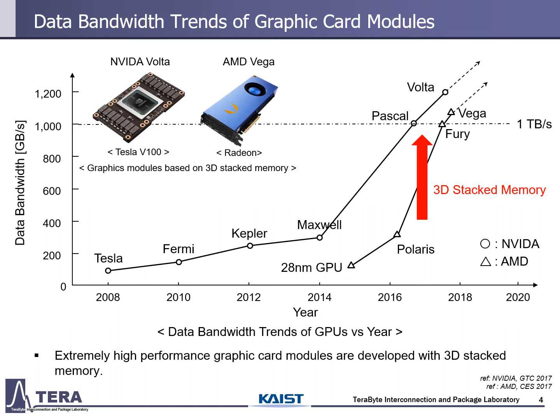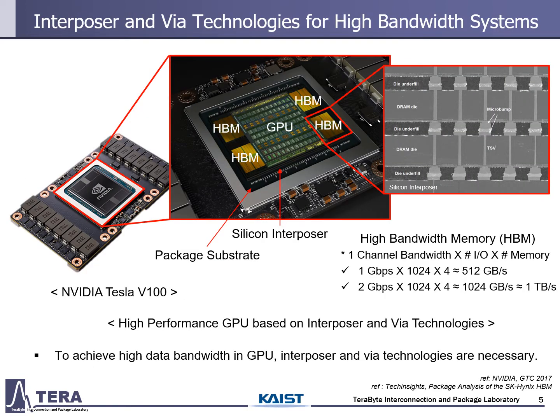Let's take a look at NVIDIA's Tesla V100, a representative product among these graphic card modules. The GPU is located in the center of the module and there are four HBMs around the GPU. These GPUs and HBMs are connected through a silicon interposer. By adopting the interposer technology, the number of IOs can be explosively increased, and through this, a data bandwidth of 1 TB per second can be easily achieved. In other words, interposer technologies become essential to achieve the demand for high data bandwidth of graphic card modules.